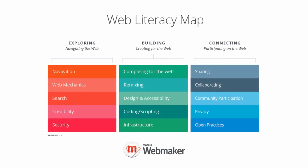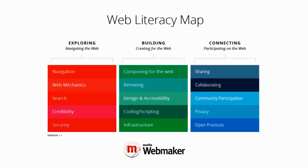If we look at the web literacy map — version 1.1 — they unpack it as exploring, building, and connecting. In this module, we're looking at connecting or participating on the web. We're thinking about aspects such as sharing, collaborating, community participation, privacy, and also open practices.